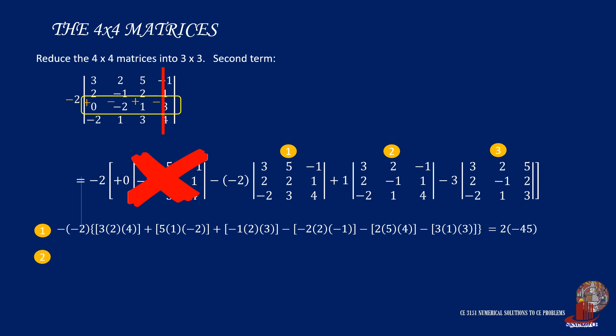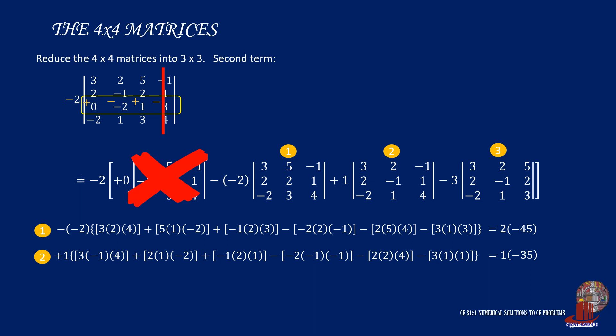For the second determinant, positives are 3, negative 1, and 4, with 2, 1, and negative 2, and also negative 1, 1, and 2. The antidiagonals contain negative 2, negative 1, and negative 1, then 2, 2, and 4, and also 3, 1, and 1. These products can be simplified into negative 35.